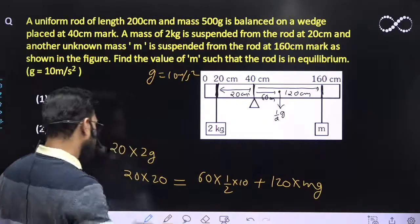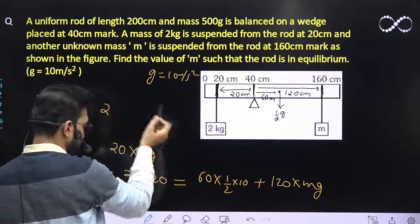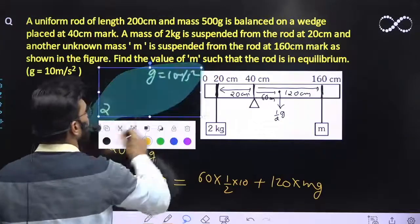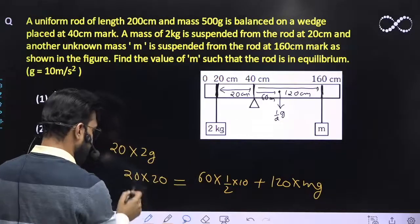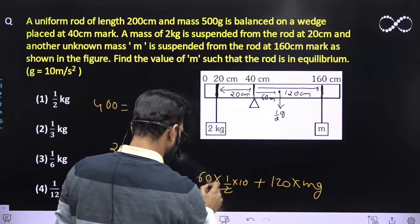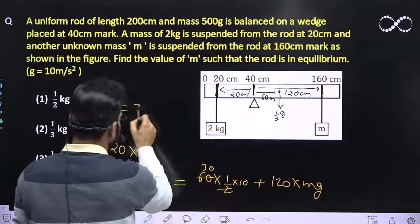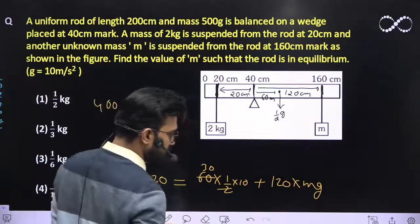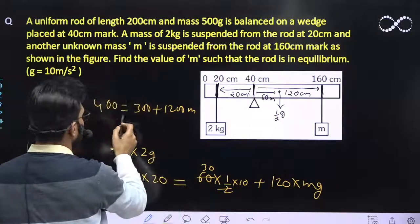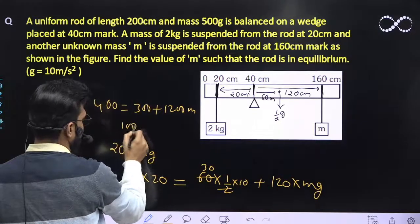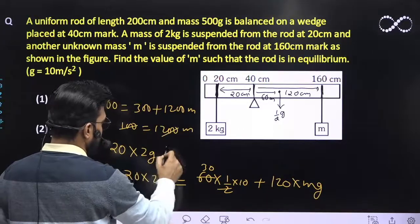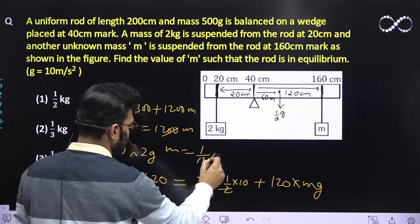Taking 10 as common factor, this term would be 400, which must equal 300 plus 1200 M. So 100 must equal 1200 M. This comes out to be 1 by 12 kg.